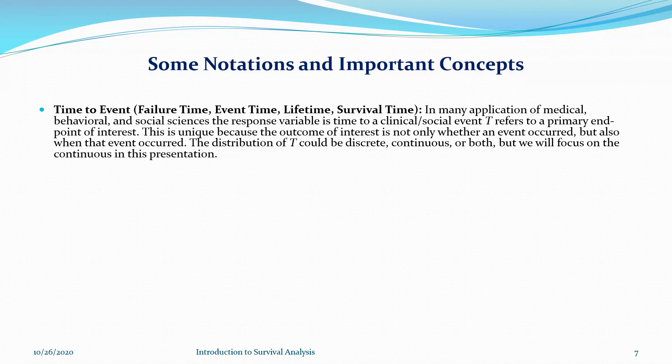This time to event would be our main endpoint of the study. The outcome of interest is not only whether an event occurred, but also when that event occurred. For example, if you graduated and want to know when you will get your first job, we can use survival analysis to see the chance of getting a first job and how much time it would take. Similarly, after your first marriage, when are you going to get a child? Time to event, or length of the event, can have different distributions — discrete, continuous, or both. But today the focus is only on continuous distributions.